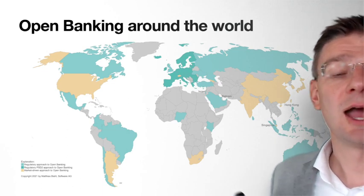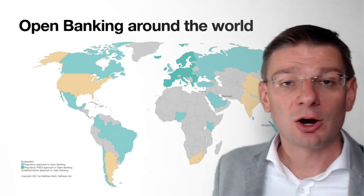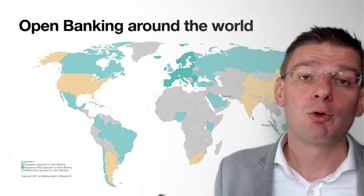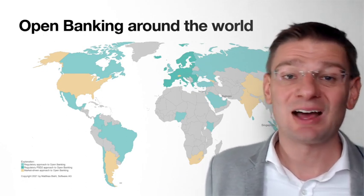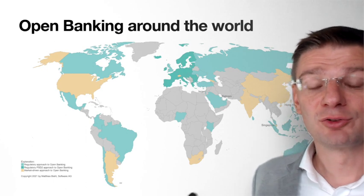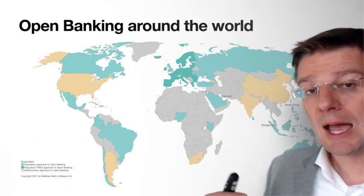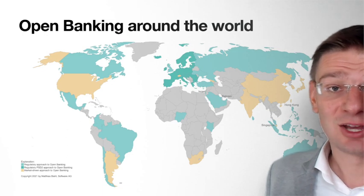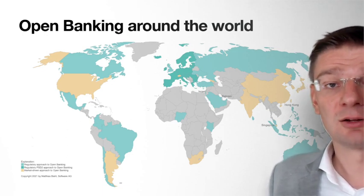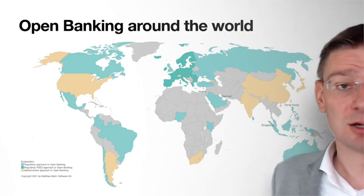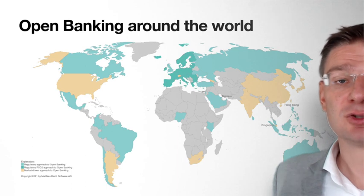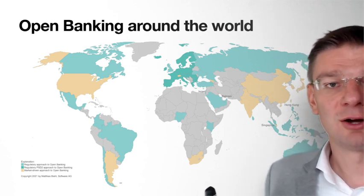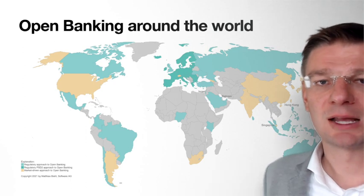In some countries, API specifications are there to prescribe how open banking APIs should look like. In others, there is no such prescription, and open banking is handled in more loose terms and is also regulated in more loose terms. Each institution kind of has to figure out how they want to implement open banking.